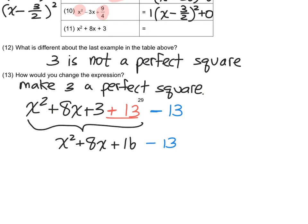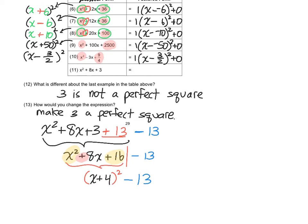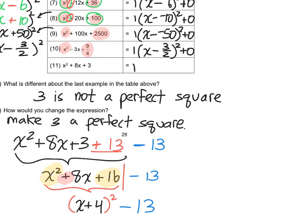Here we're factoring by grouping — just a different kind of grouping than we were working on before. It's not going to involve GCFs. We'll partition it right there. Since this is now a perfect square trinomial, this is factorable to something squared. Taking the square root of the first and last terms — x plus 4 — and carrying down the middle sign. But we still have that negative 13 tacked on at the end. So this is equivalent to 1 times x minus negative 4 squared minus 13.